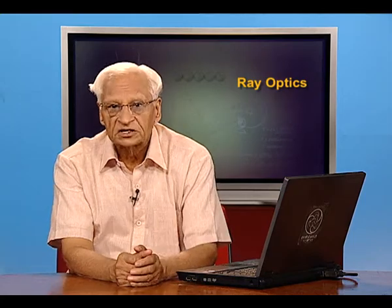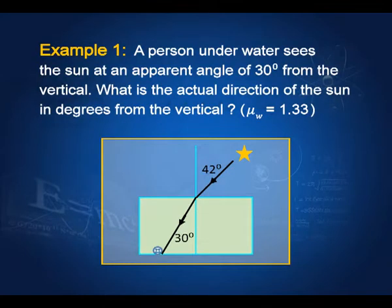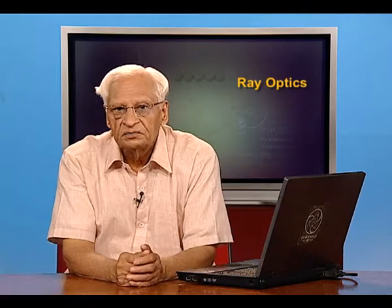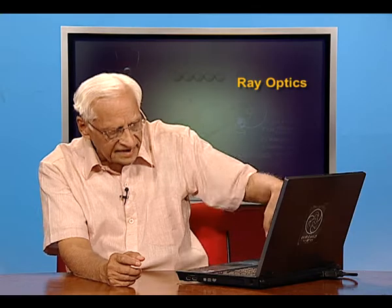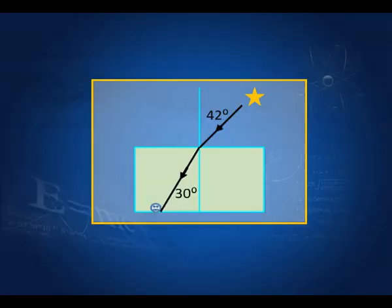The light is going to suffer refraction as it enters water. I have shown the actual direction of the sun and then the bent ray which reaches the person. If the actual direction of the sun from the vertical is i, then sin(i) / sin(r) = 1.33, the refractive index of water. For the given value r = 30 degrees, we can calculate i, and you will find i is equal to roughly 42 degrees. So the sun rays are coming at 42 degrees to the vertical, but because of refraction, the person inside water sees the rays coming at 30 degrees.